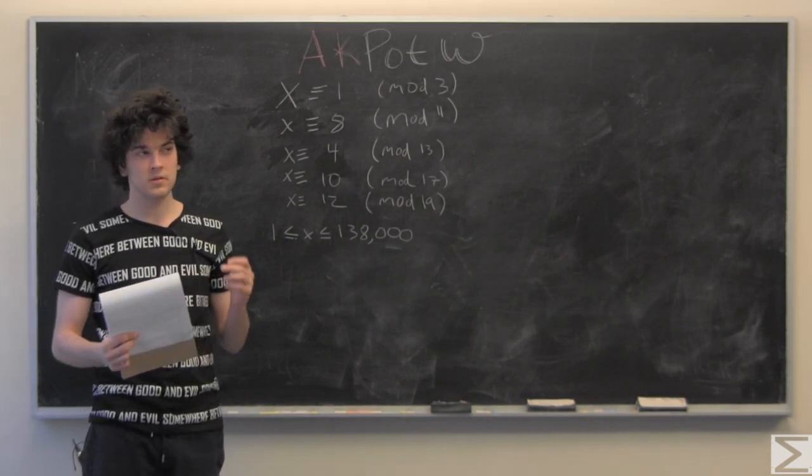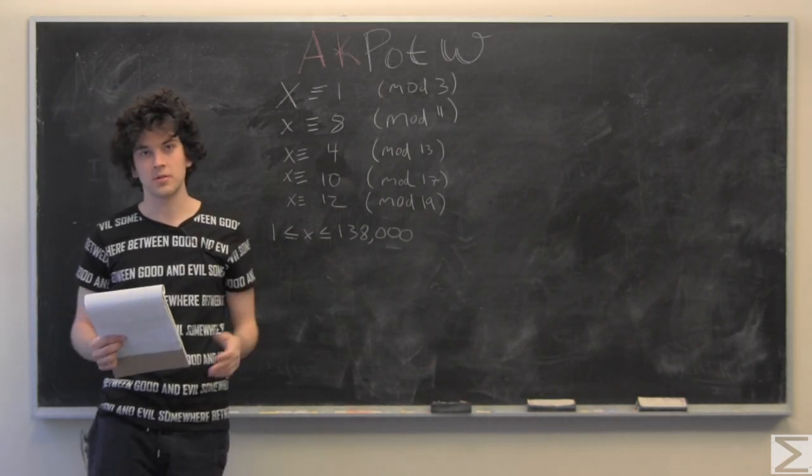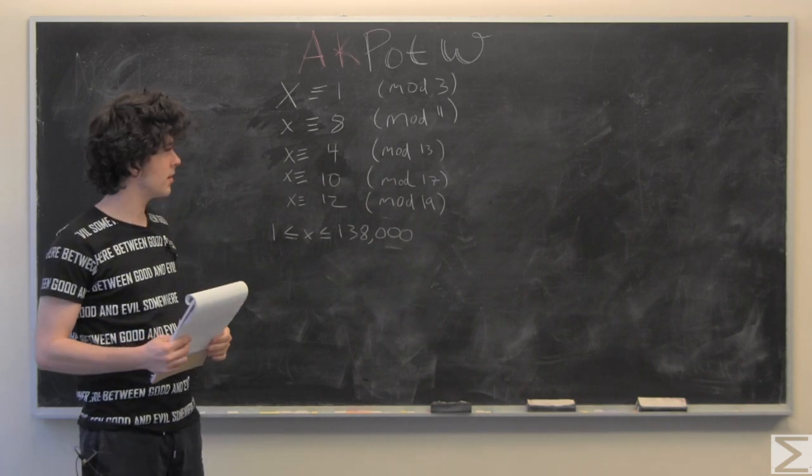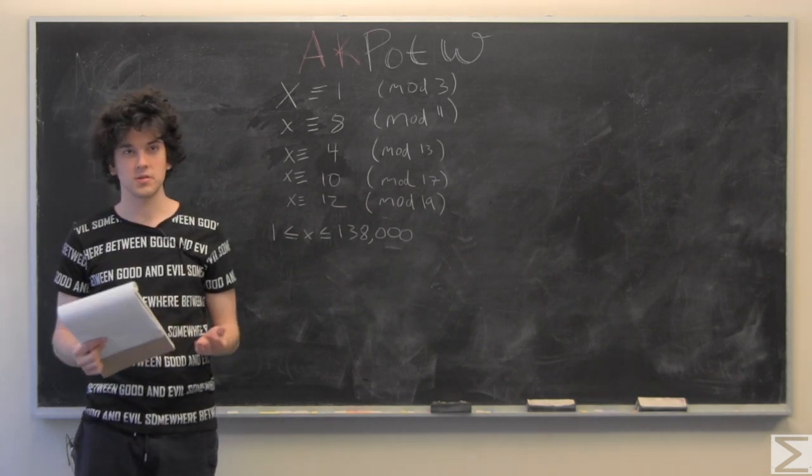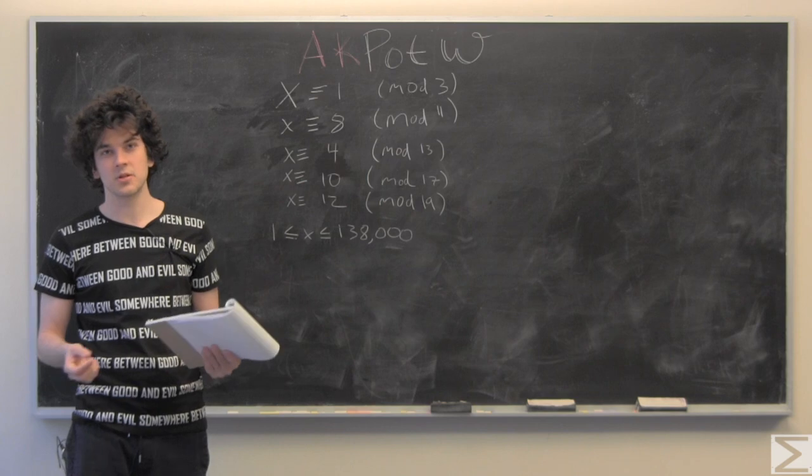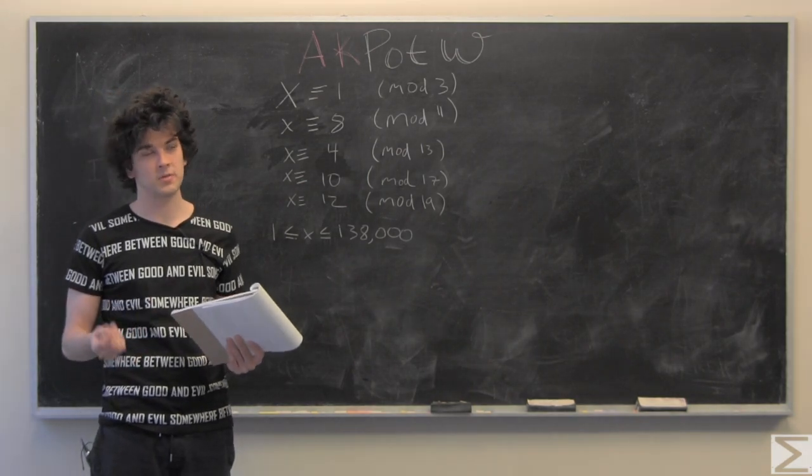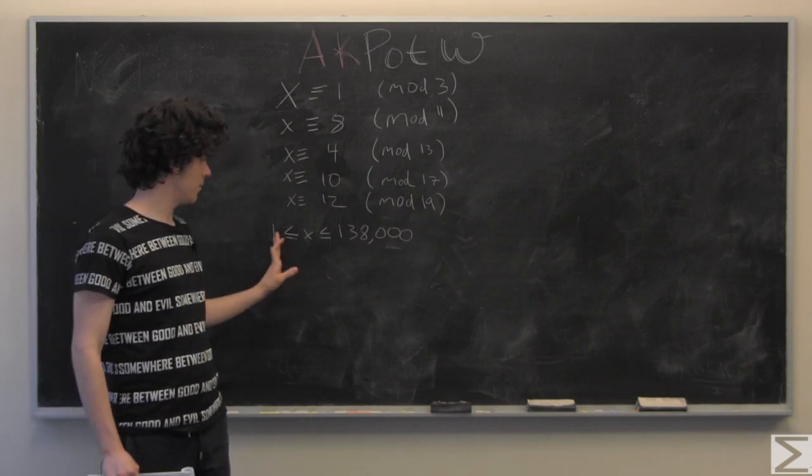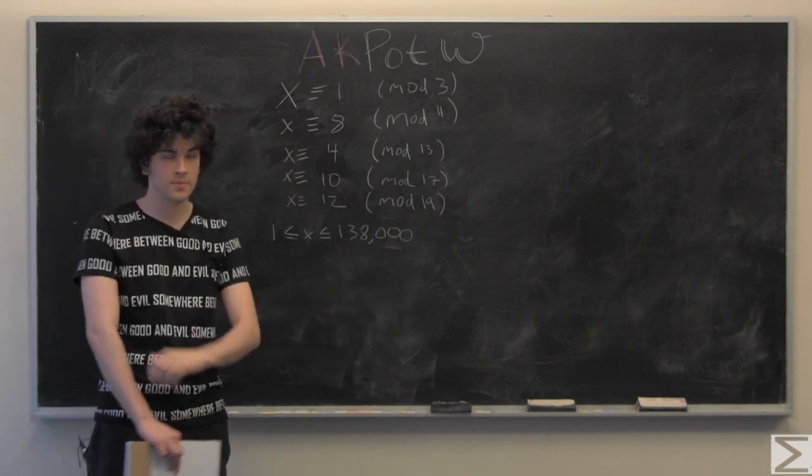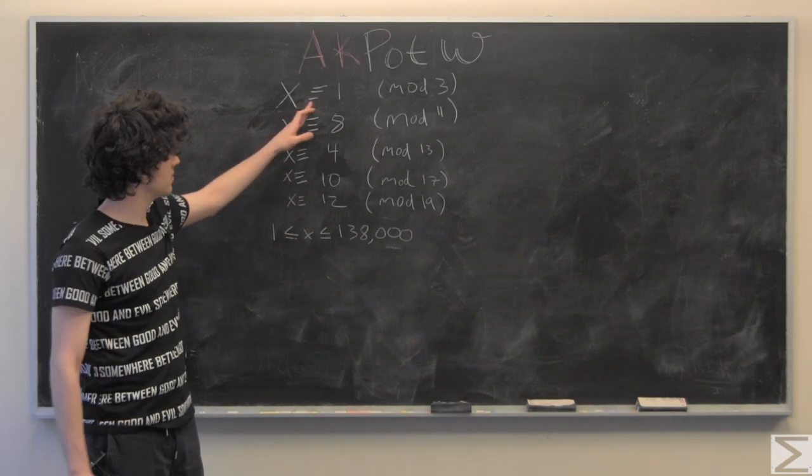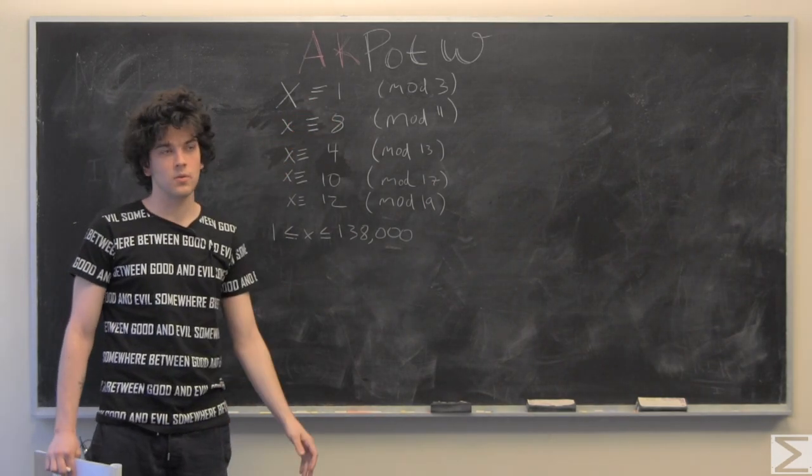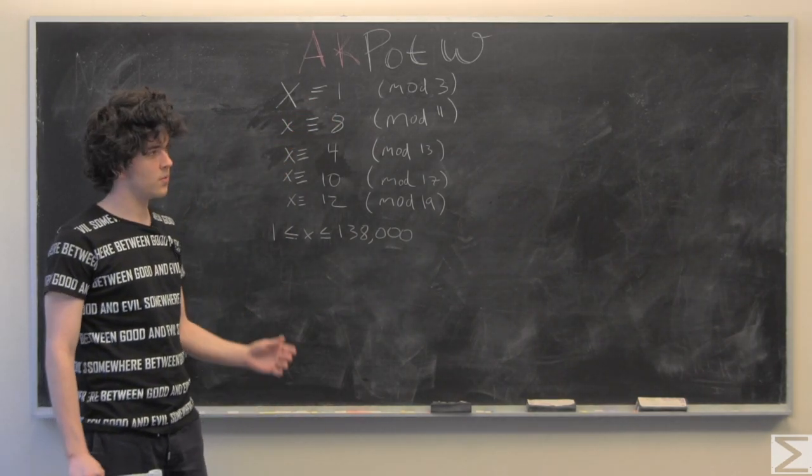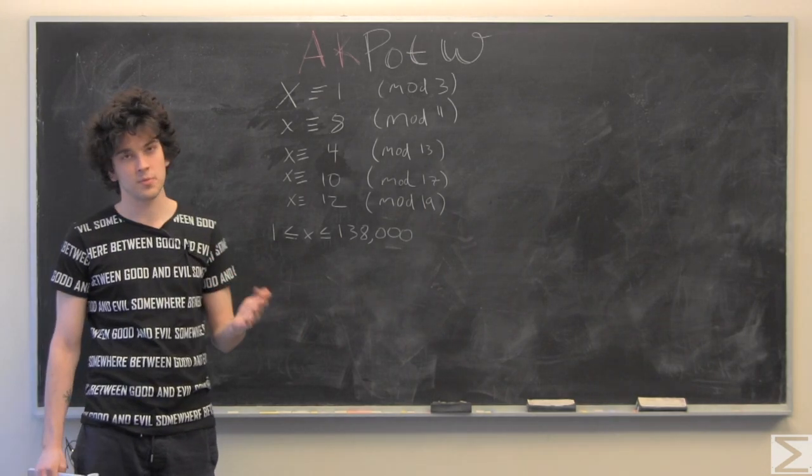This week involves some modular arithmetic, so if you're not familiar with that, I suggest you search it on Google and find out some information. But basically, we know that X is between 1 and 138,000, and X is congruent to 1 mod 3, which just means that when you divide X by 3, you have a remainder of 1.